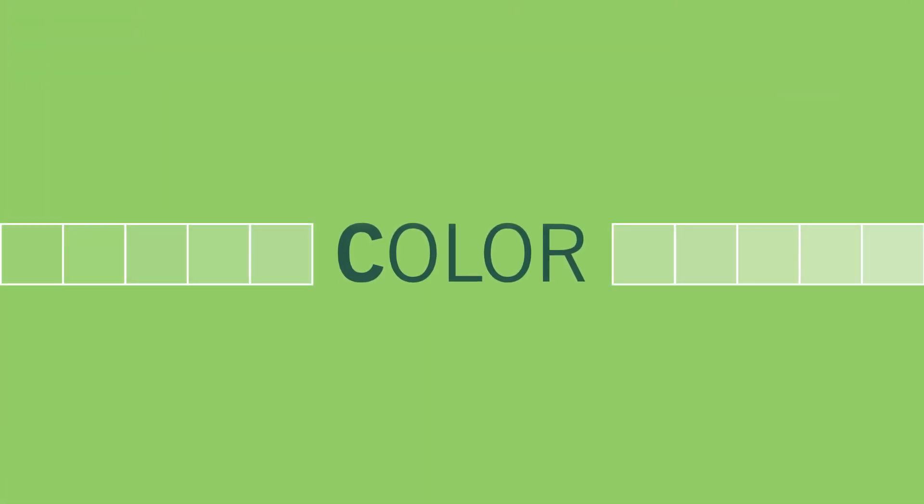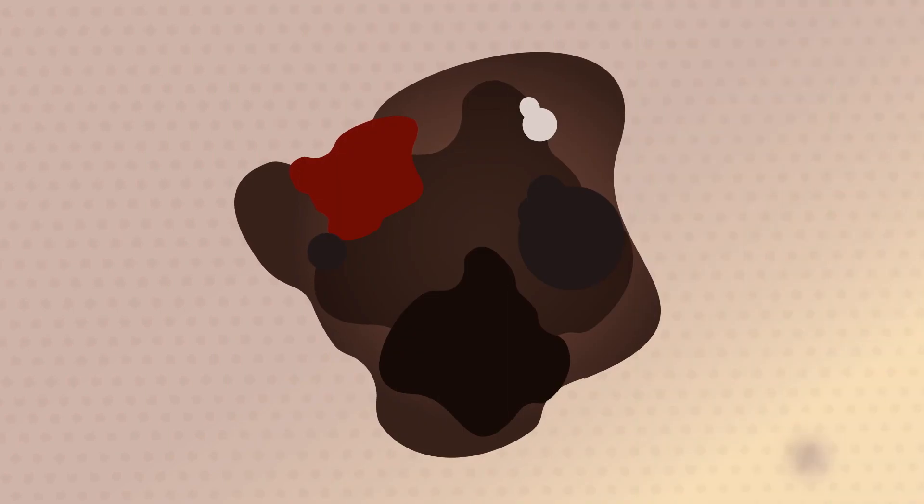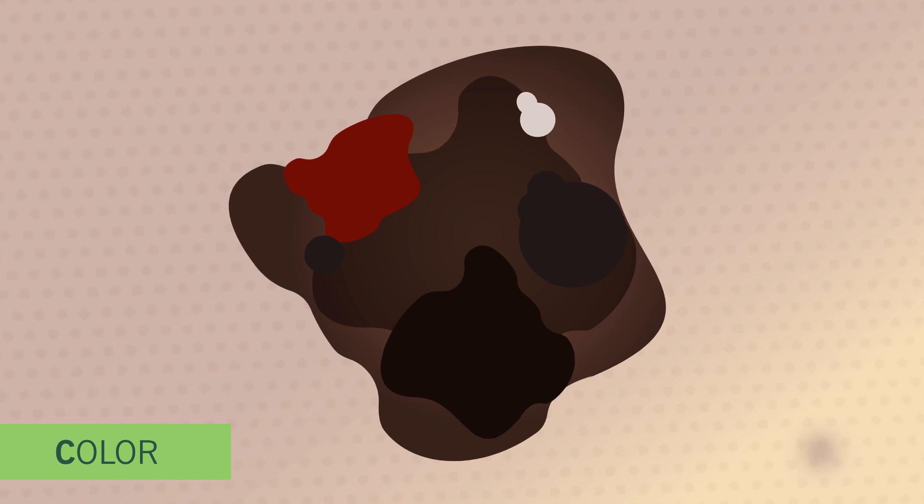C. Color. The color of a melanoma is mottled and inconsistent, with shades of brown, black, gray, red, or white mixed together.